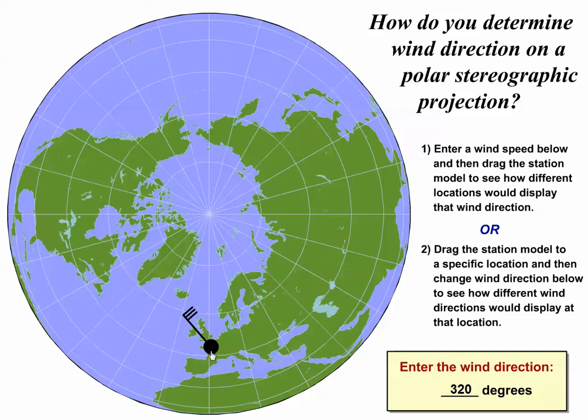If we move the station model to the middle of North America, it now looks completely different, but the wind is still from the northwest, and we can tell that if we look at how the wind flag is oriented compared to the nearest latitude circle, which runs east to west, and longitude line, which runs north-south.